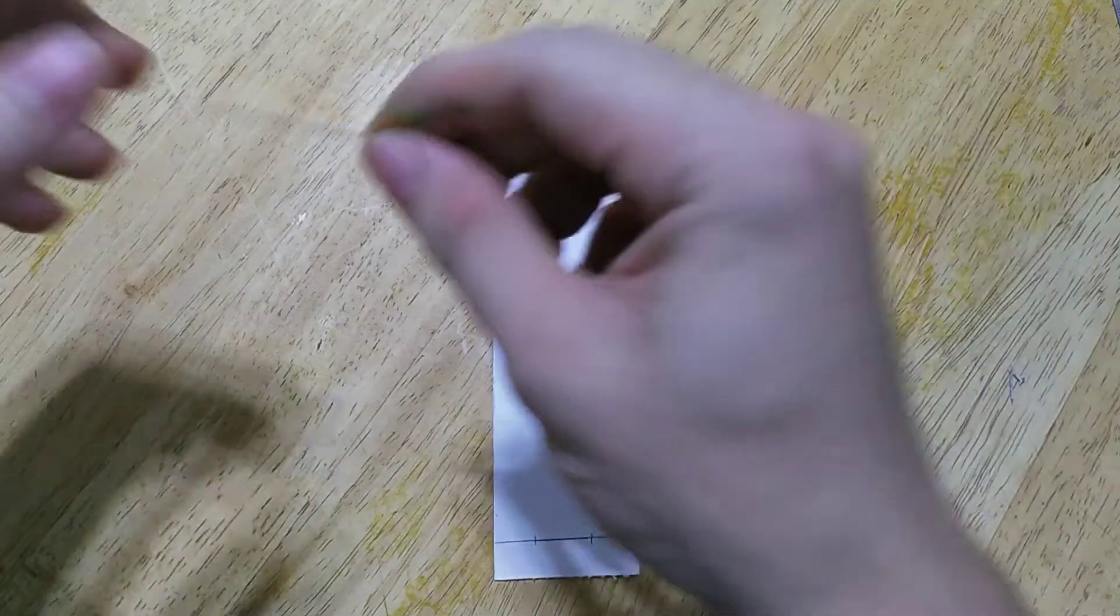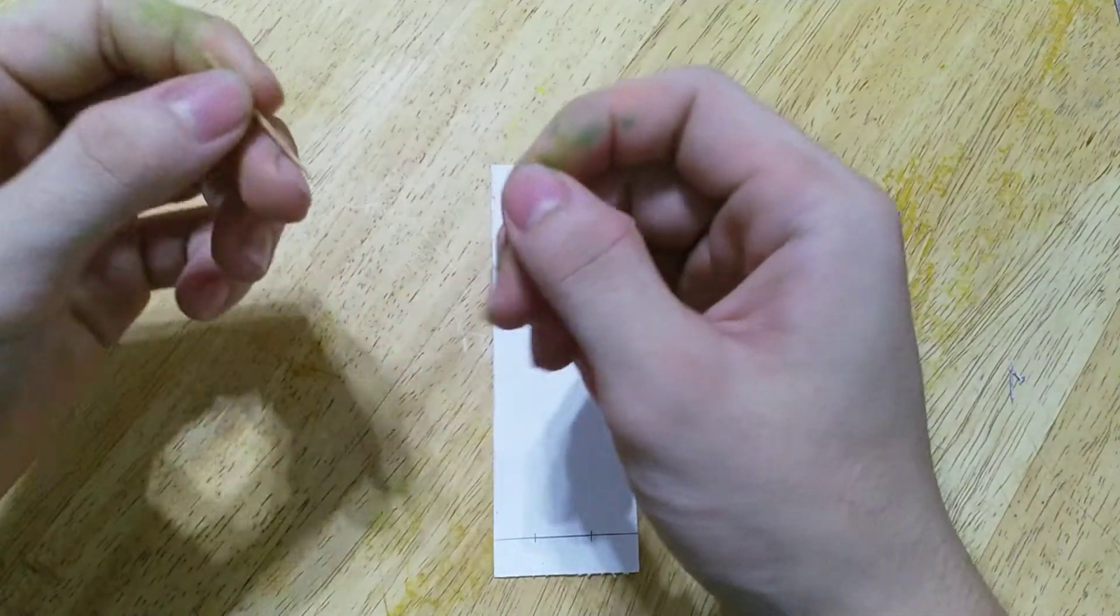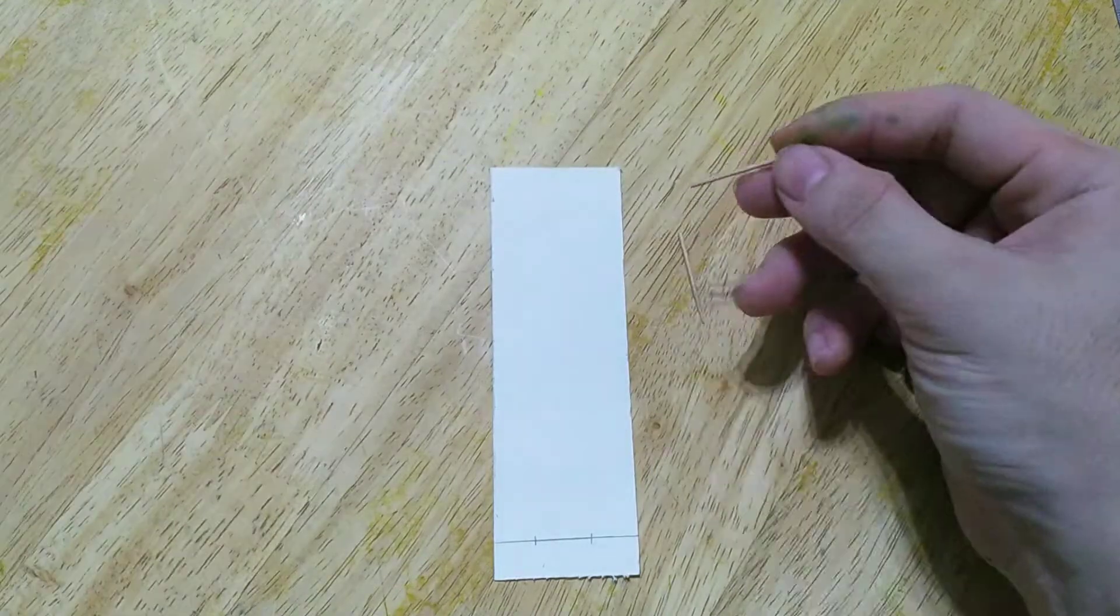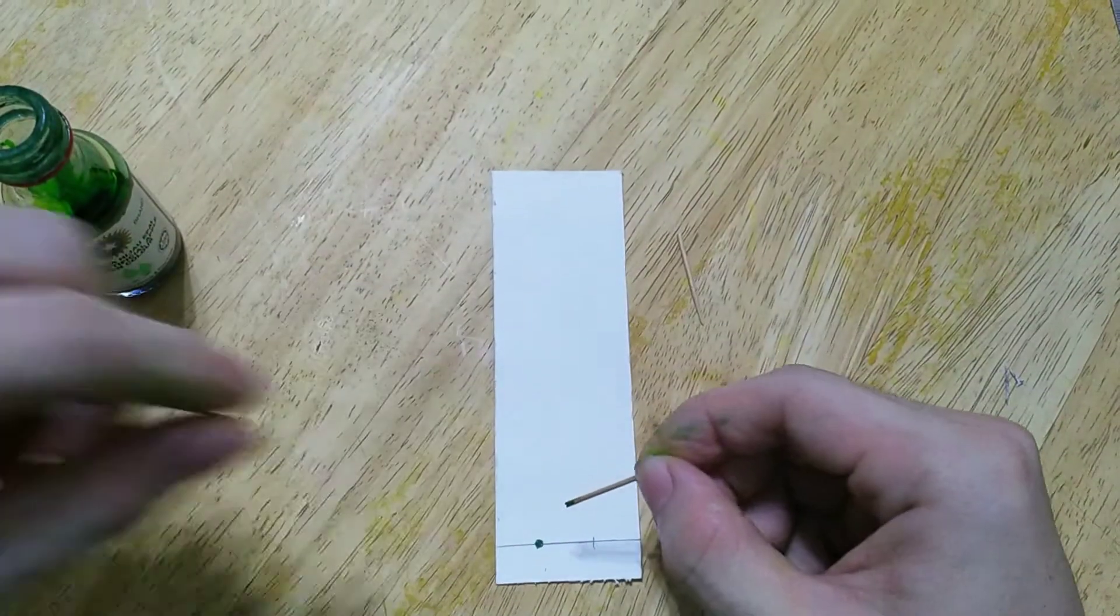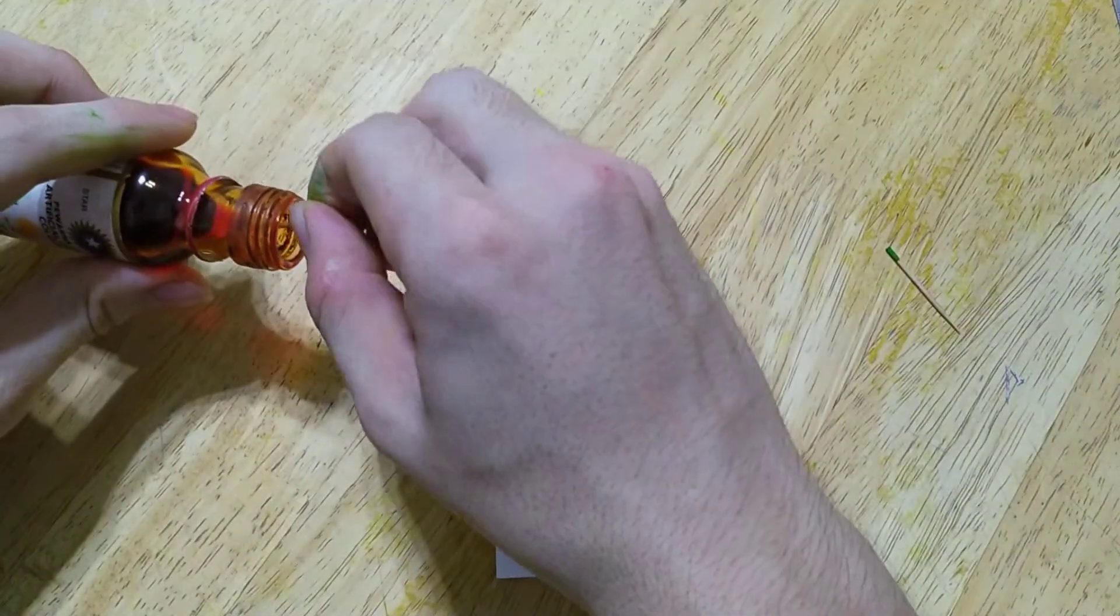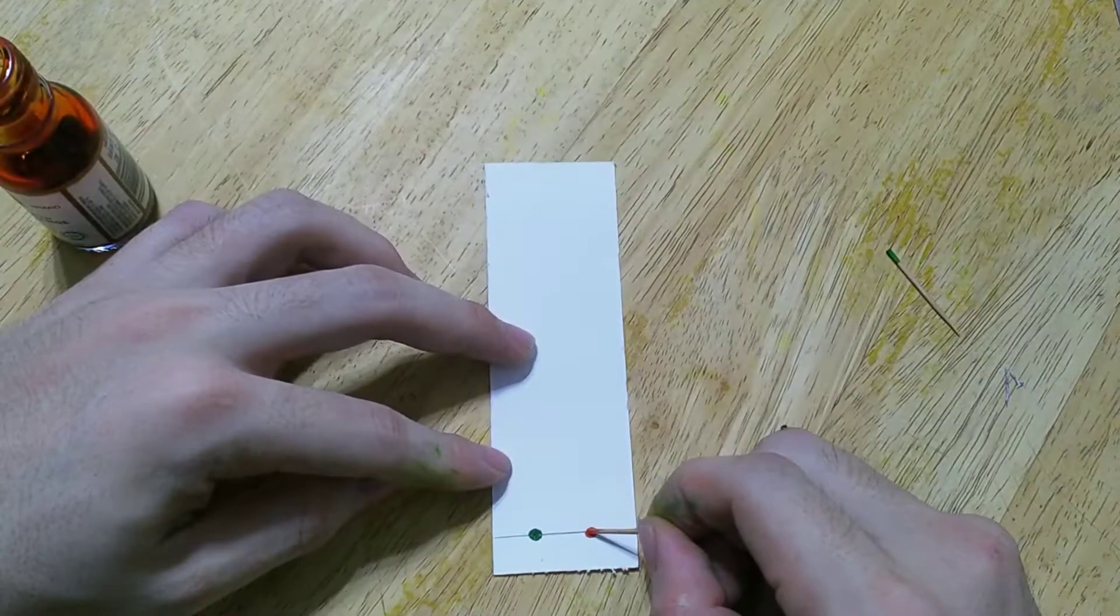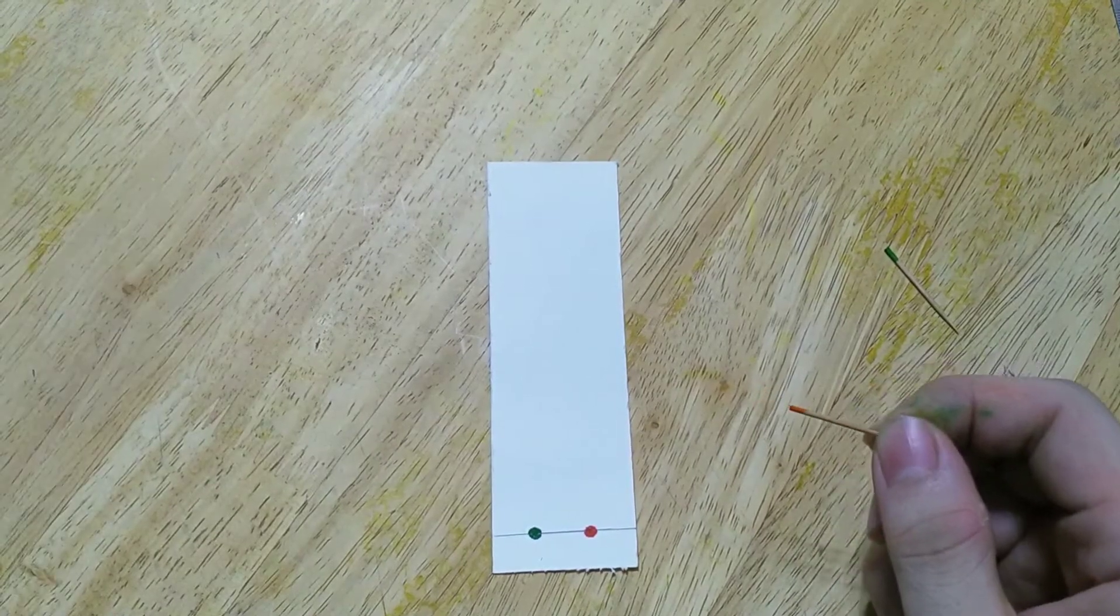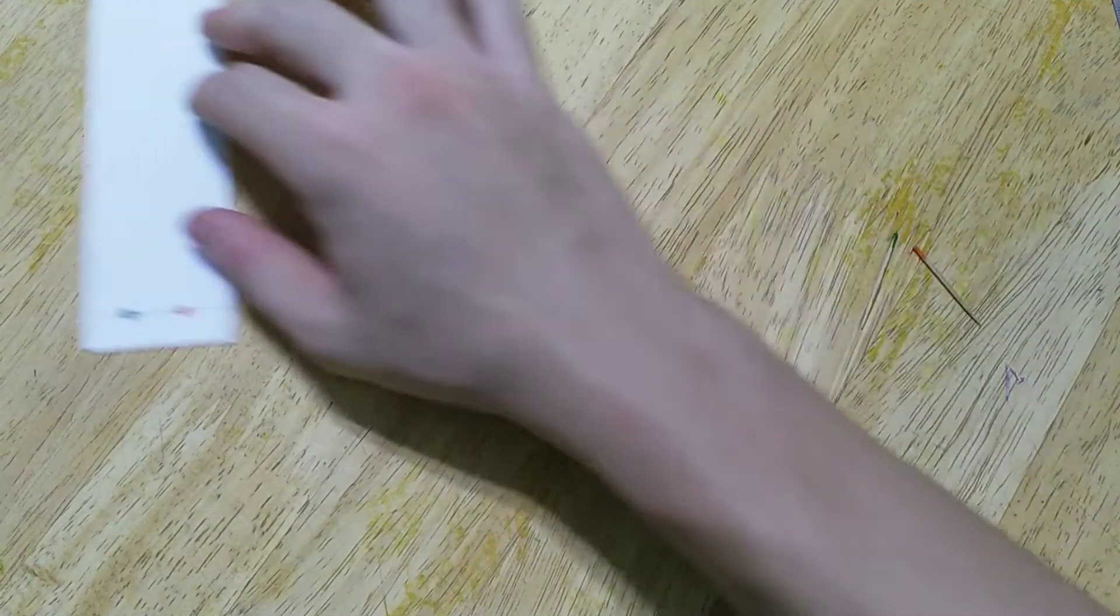Now, I make my toothpick into half. One for green color, one for orange color. So that's it. Now let it dry for a couple minutes. So we put it aside.